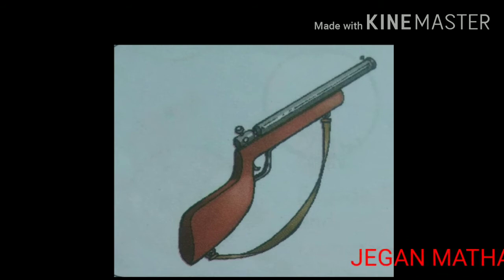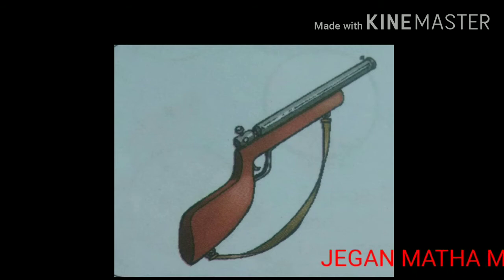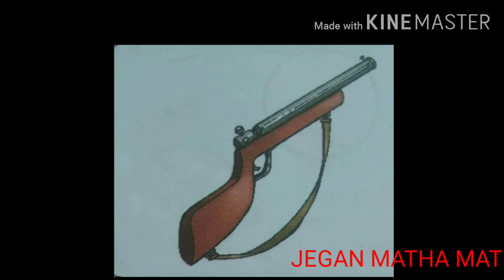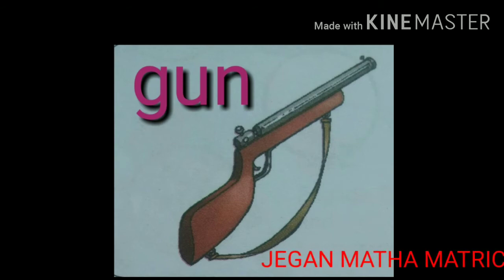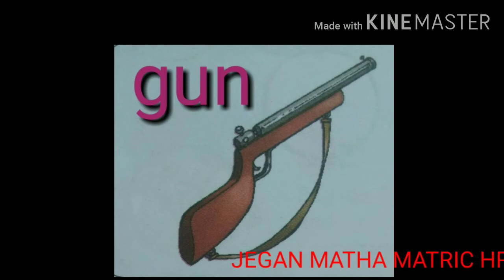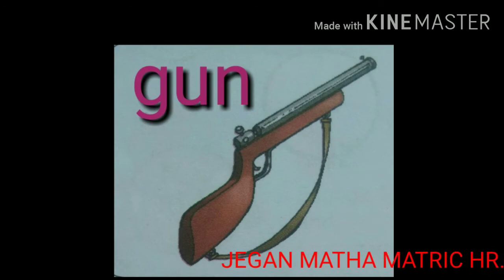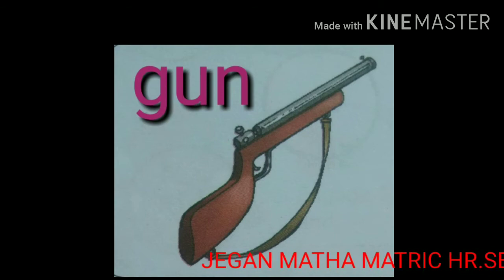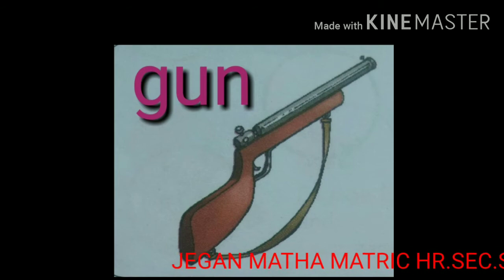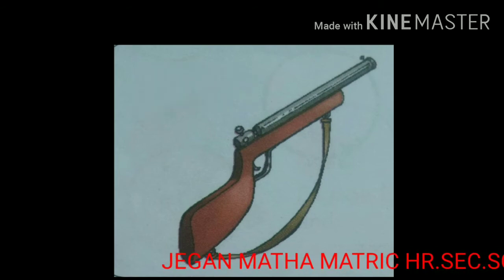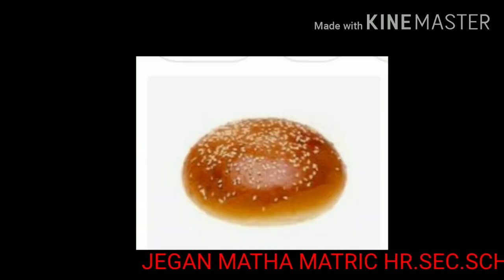Now see this picture. This is a gun. It is a weapon. It makes a loud and short noise. Now see the spelling: G, U, N — Gun.